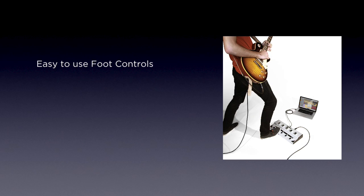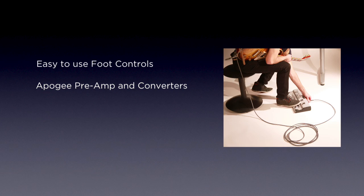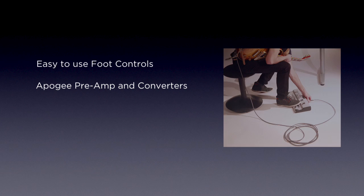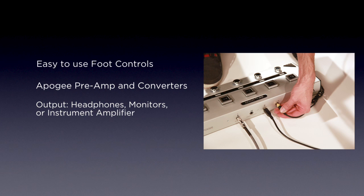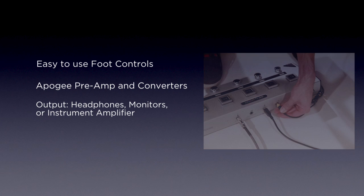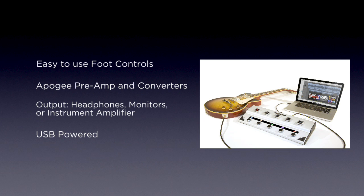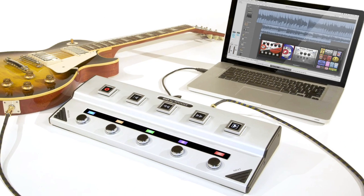GEO has everything you need to record and control your guitar in Logic Pro 9, Main Stage 2 and GarageBand 09. Easy-to-use foot controls let you keep your hands on the guitar. World class instrument preamp and converters let you hear and record your guitar's true tone. Hear your guitar and mix with incredible clarity through the quarter inch stereo output. GEO is fully powered by the USB connection, eliminating the need for an external power source.